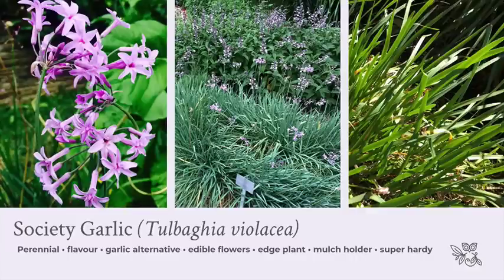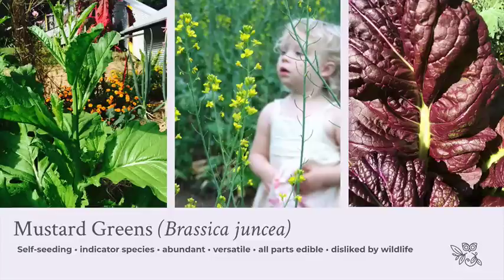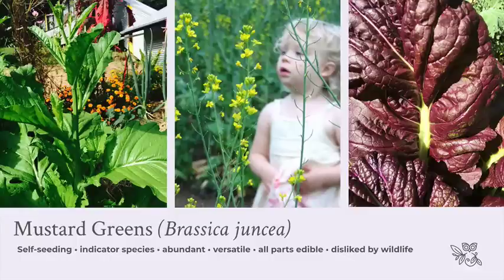Mustard greens are such a favorite of mine in an edible landscape. They're an annual, but one I really do love — and it's not something I plant; it self-seeds every year. There are different sorts: red mustard spinach, big green mustard spinach, frilly ones — all different types that come back. One thing I love about mustard greens is that they're an indicator species: when I see them first starting to self-seed, I know it's getting cool enough to plant all my other brassicas.